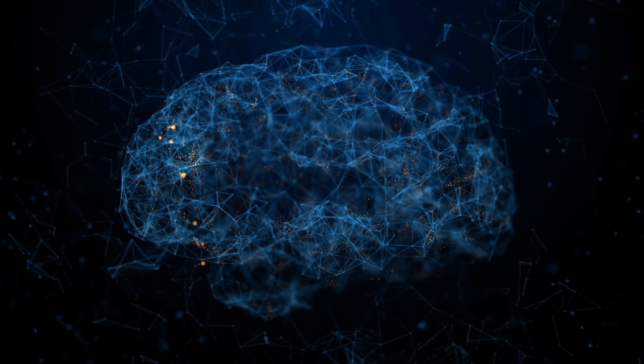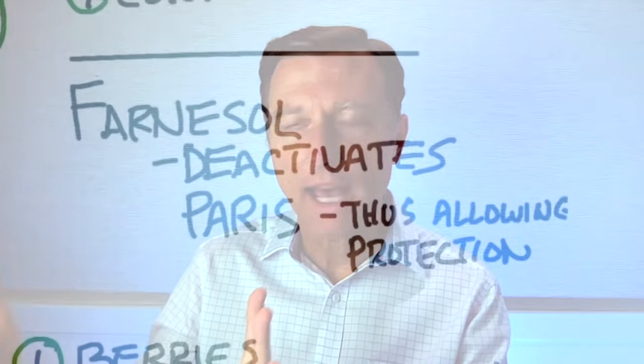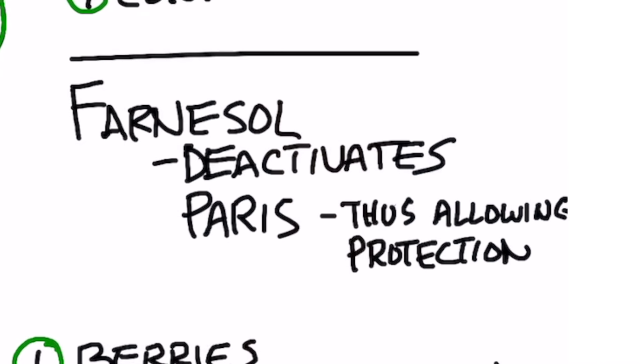So now we have this accelerated oxidation, accelerated inflammation, accelerated degeneration of certain parts of the brain. Well, it just so happens there is another compound that can deactivate Paris. And that's called Farnesol to allow these protective proteins to prevent things like Parkinson's and other degenerative brain diseases.